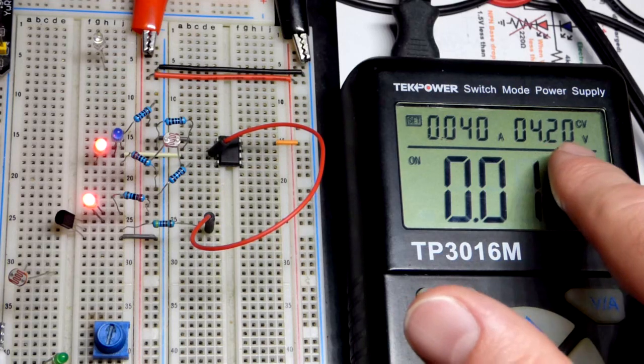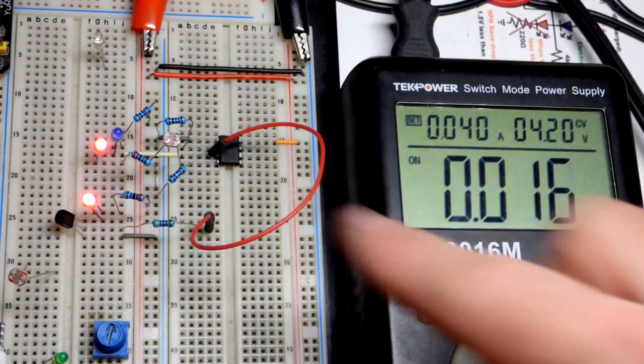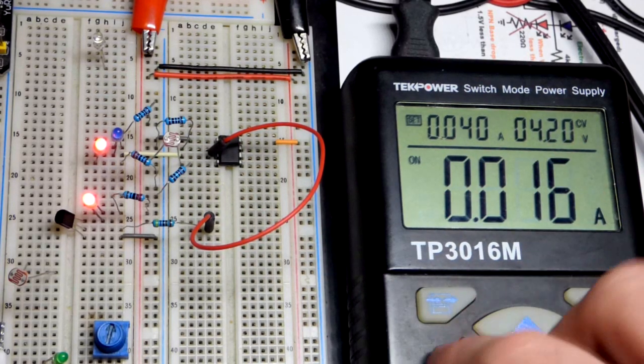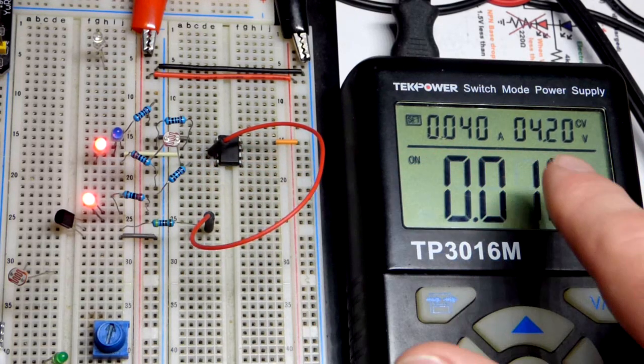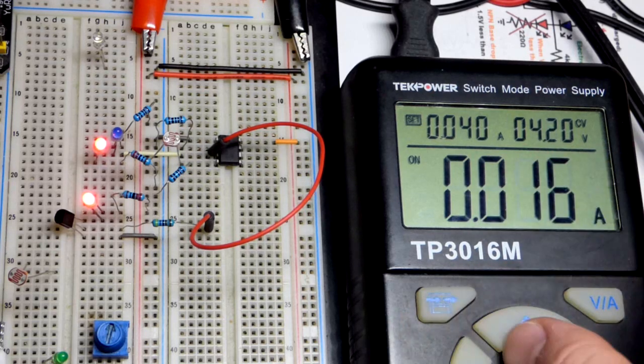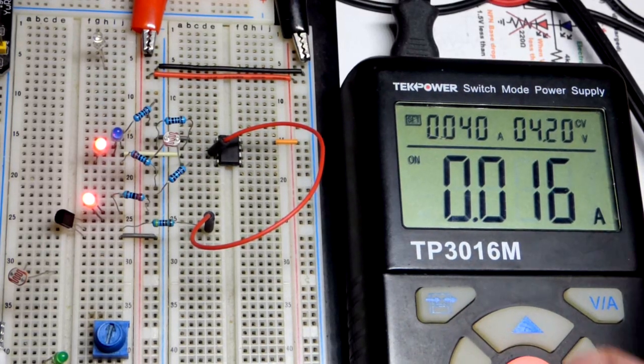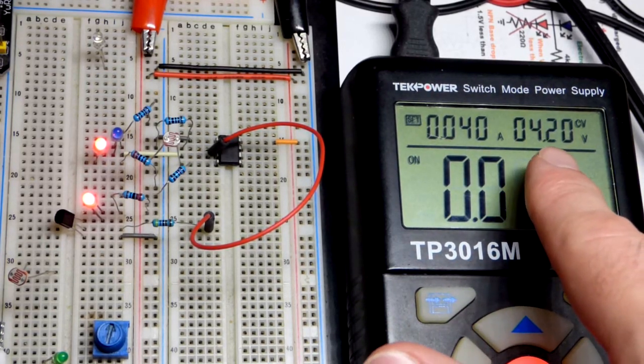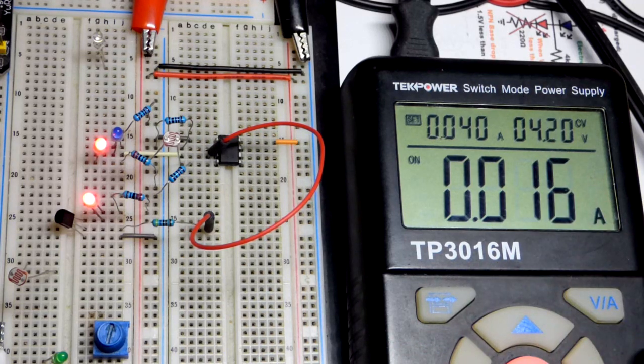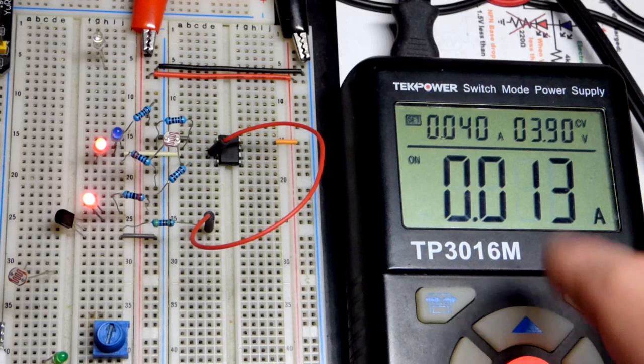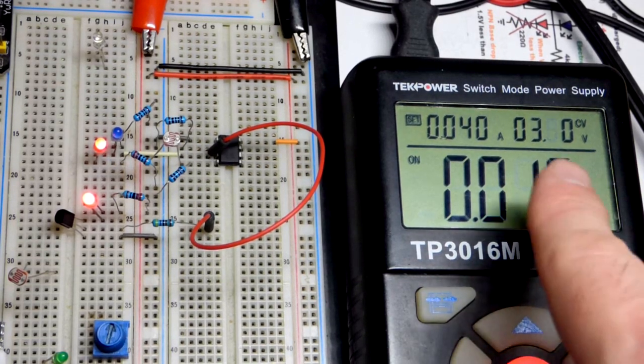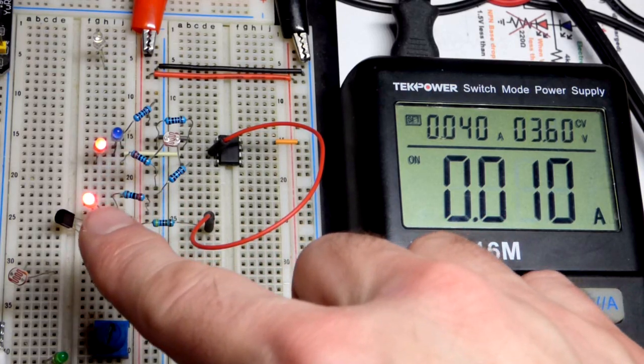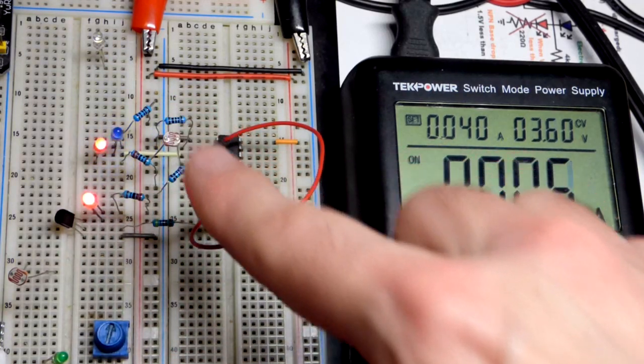We've got about 4.2 volts powering the circuit. That's what a lithium ion battery will be right after you charge it. As you can see, as we get closer to 3 volts, this LED doesn't really dim very quickly.